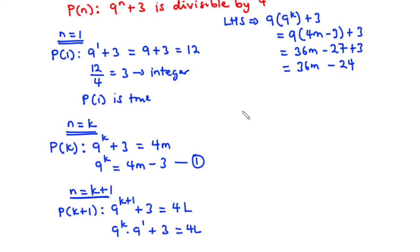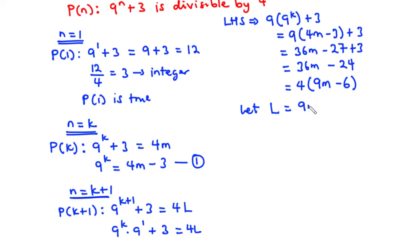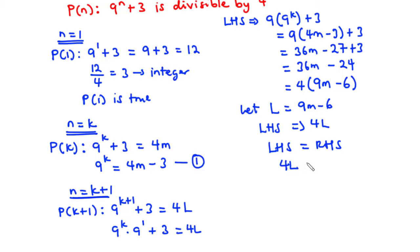Since the original statement is divisible by 4, we factor out 4: 36m minus 24 equals 4 times (9m minus 6). We let l equals 9m minus 6. Since m is an integer, it follows that l is also an integer. Therefore the left-hand side equals 4l, which equals the right-hand side, giving 4l equals 4l.